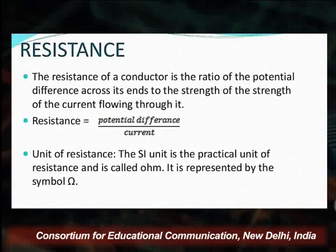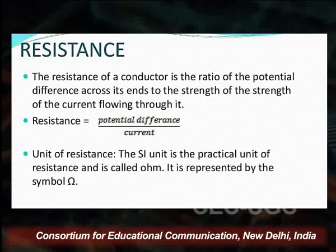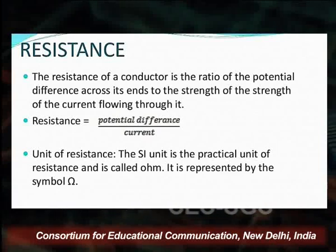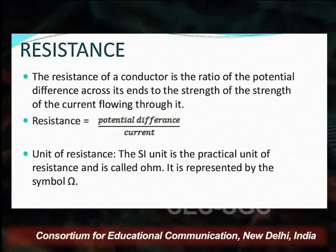What is resistance? We are discussing the definitions of some electronic components. The resistance of a conductor is the ratio of the potential difference across its ends to the strength of the current flowing through it. So resistance is defined as potential difference divided by current. Resistance equals potential difference divided by current. Its unit is the Ohm, represented by the Omega symbol (Ω).